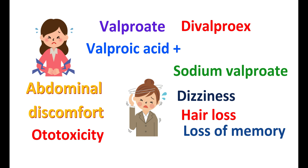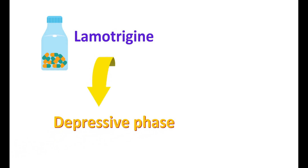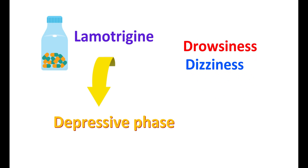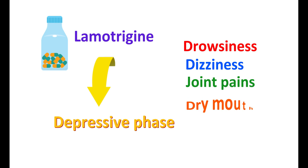Another anticonvulsant is lamotrigine, which is used to control the depressive phase in bipolar disorder. Like valproate, lamotrigine acts by multiple mechanisms to reduce neuronal excitation. This drug can produce side effects like drowsiness, dizziness, joint pains, and dry mouth.